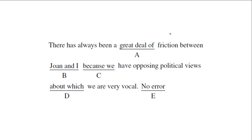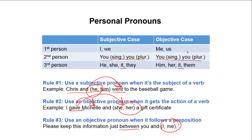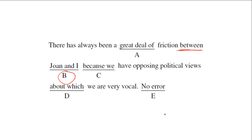Problem three: 'There has always been a great deal of friction between Joan and I because we have opposing political views about which we are very vocal.' The error occurs at B — the pronoun I. I is subjective, but 'between' is a preposition, and we need an objective pronoun when it follows a preposition. Just like 'between you and me' — we change I to me. 'There has always been a great deal of friction between Joan and me...'